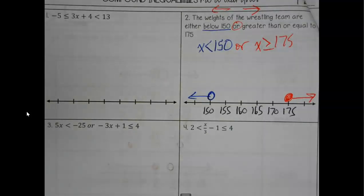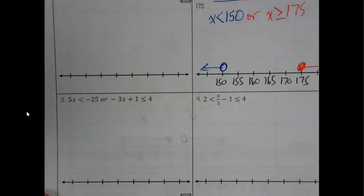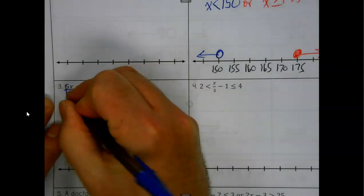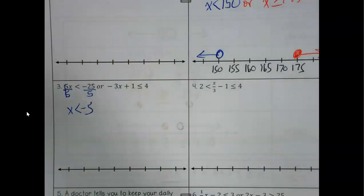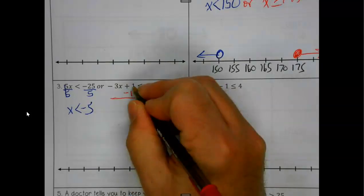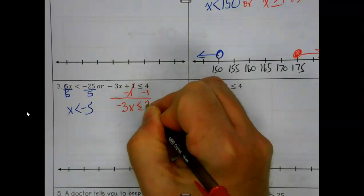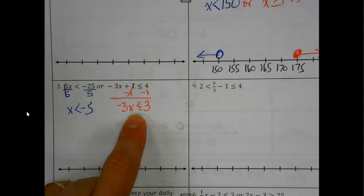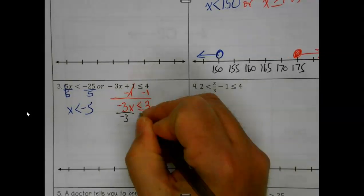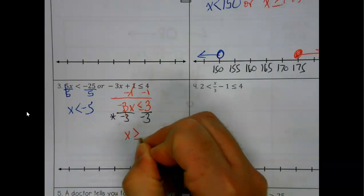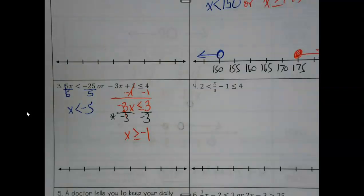I'm going to do one more because I see something important. With inequalities it's the details that mess everything up. What's the last step on the red inequality? To undo multiply by negative three, we divide by negative three. What happens when you divide both sides by a negative? The inequality flips — we have to flip the arrow.